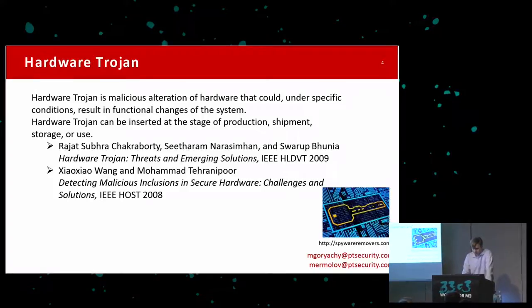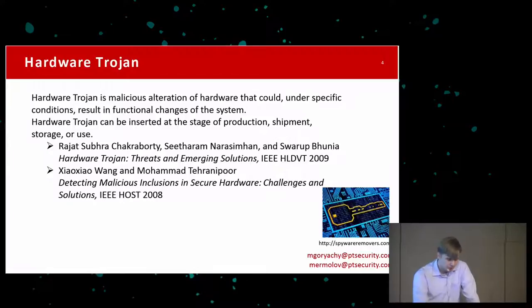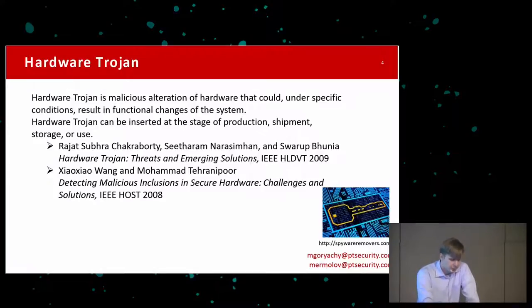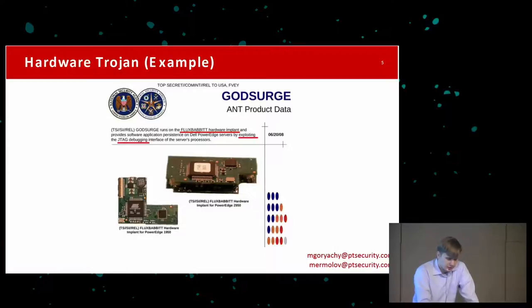A hardware Trojan is a malicious alteration of hardware that could, under a specific condition, result in functional changes to the system. It can be inserted at the time of manufacture, shipment, storage, or use. In the NSA catalog, which recently became available to the public, there is information on a dedicated device for Dell servers that is, in fact, a classic hardware Trojan.